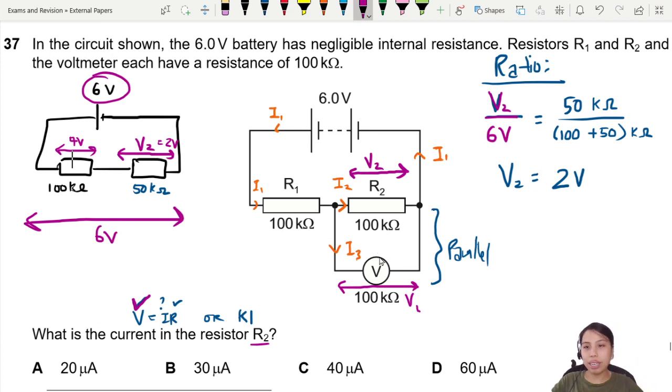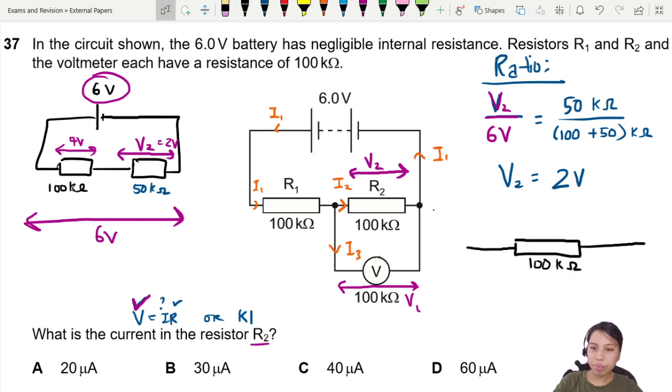I think we are ready to find the current in the resistor. So end of the day, all we need to do is apply Ohm's law to our resistor here. Because now we want to find the current going through it. We know the resistance. Already got. We know the potential difference. 2 volts. VIR. Let's go.